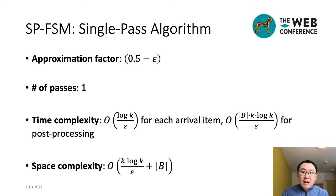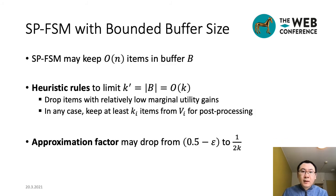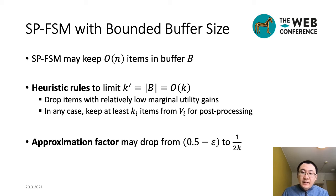From the theoretical results, we can find one problem of our single-path algorithm: it may keep all n elements in the buffer. So, we further propose some heuristic rules to restrict the buffer size. When the buffer size exceeds a limit, we will drop items with relatively low marginal utility gains from the buffer. In this case, the approximation factor might drop from 0.5 minus epsilon to 1 over 2K in the worst case. Nevertheless, our empirical evaluation shows that restricting the buffer size does not degrade the solution quality very obviously in practice.